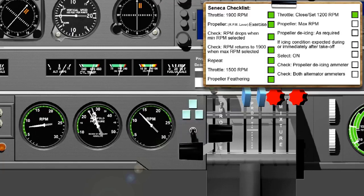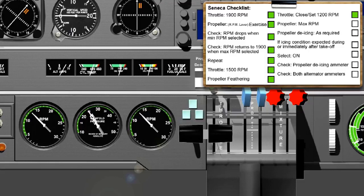Throttle close and set 1200 RPM. Initially the throttle lever should be closed and the slow running RPM checked at between 700 to 800 RPM. Then the throttle should be set to obtain 1200 RPM. At this RPM the engine should run smoothly and the spark plug should not oil up while you're carrying out the checks on the other engine. Propellers max RPM. Select the propeller control lever to the maximum RPM position.